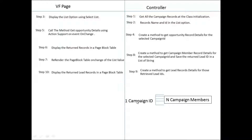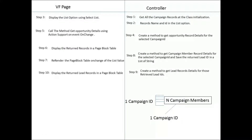Here is the visual process flow of the requirement. We are fetching the campaign members using the campaign ID in a one-to-many relation — campaign members having the same campaign ID, and campaign members may have lead IDs. You get the list of lead IDs in a list of string, and using those string IDs you fetch the lead records: select ID from lead where ID is in that list of string.